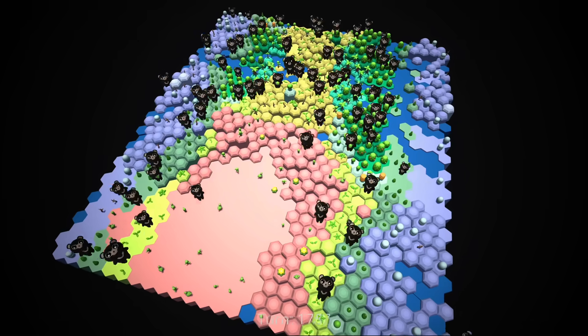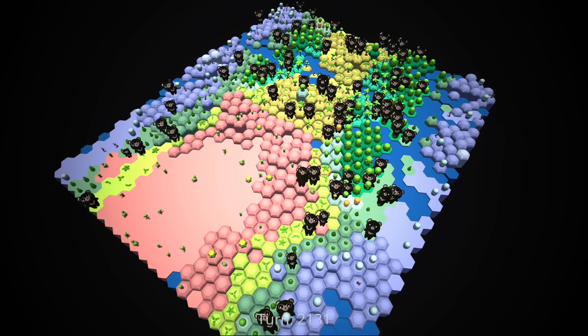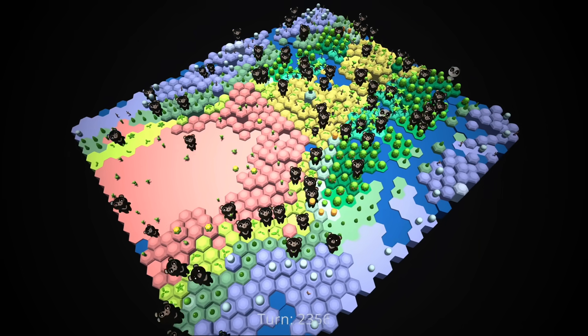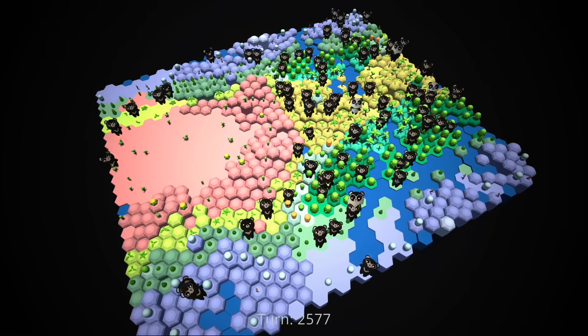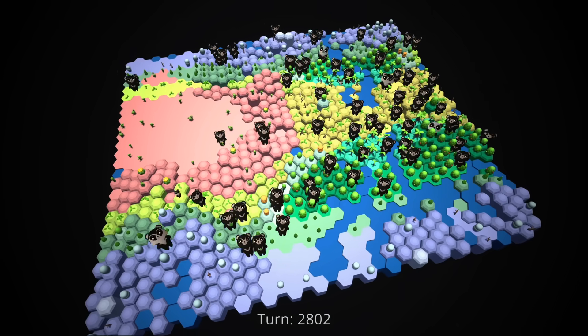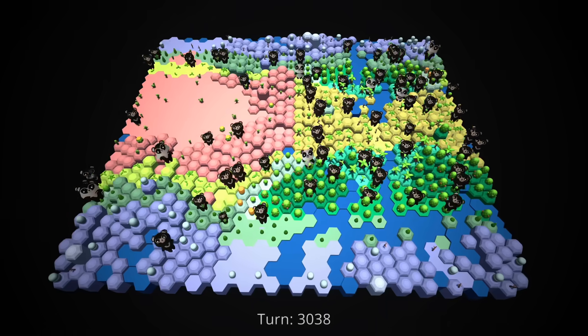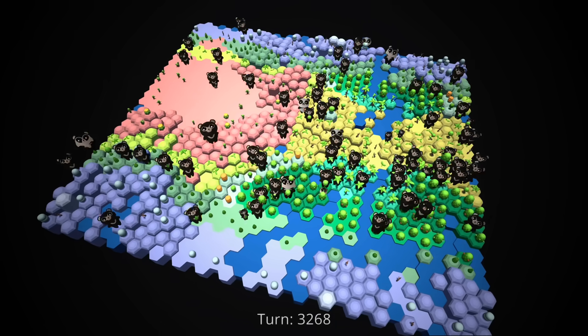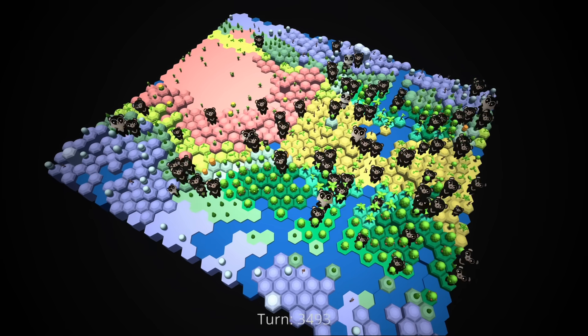The simulation runs on the basis of turns, which you can think of as nondescript amounts of time during which each creature is able to take one action. At their starting values, creatures live for a thousand turns and take roughly three turns to travel between tiles. Creatures cannot take any action while moving and will leave a trail of scent which lasts several turns and can be tracked by both predators and potential mates.